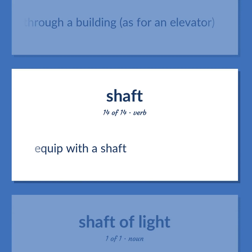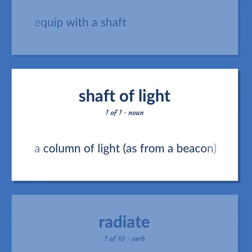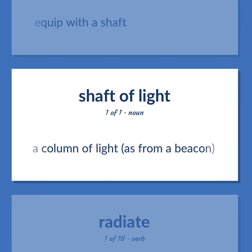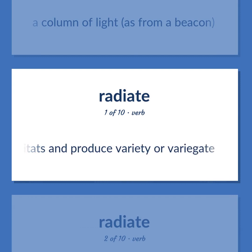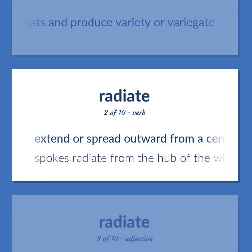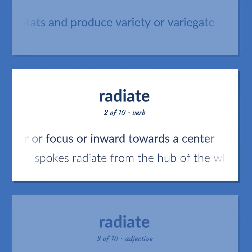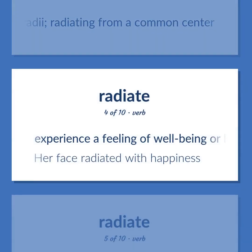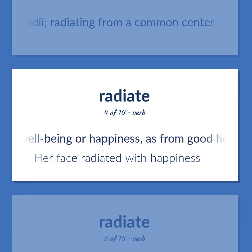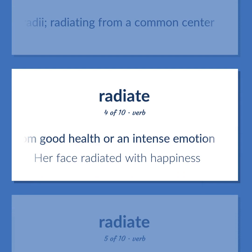Equip with a shaft. A column of light, as from a beacon. Radiate: spread into new habitats and produce variety or variegate. Extend or spread outward from a center or focus, or inward towards a center — 'Spokes radiate from the hub of the wheel.' Arrange like rays or radii; radiating from a common center. Experience a feeling of well-being or happiness, as from good health or an intense emotion — 'Her face radiated with happiness.'